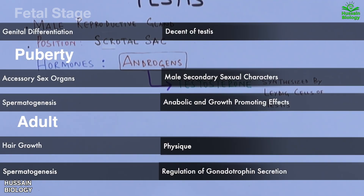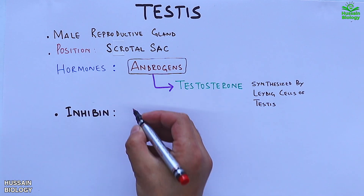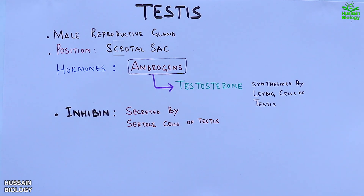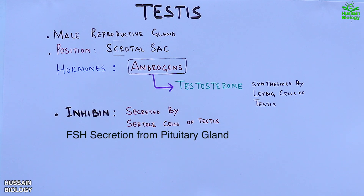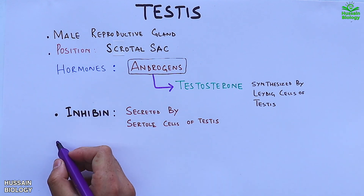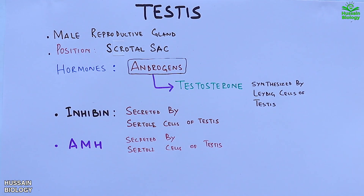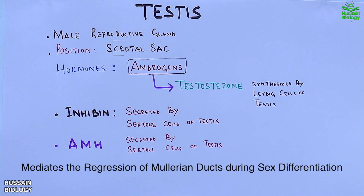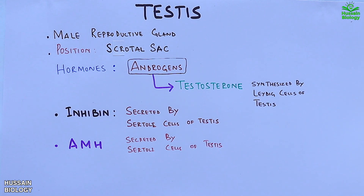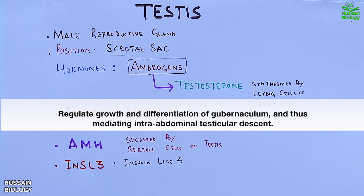Second is the inhibin hormone, secreted by the Sertoli cells of the testes — particularly inhibin B — which controls FSH secretion from the pituitary gland via a negative feedback mechanism. Third is AMH, anti-Müllerian hormone, also secreted by the Sertoli cells; it mediates regression of the Müllerian duct and plays a major role in the development of internal male genitalia. Fourth is INSL3, insulin-like 3 hormone, secreted by the Leydig cells, which regulates growth and differentiation of the gubernaculum, thereby mediating intra-abdominal testicular descent.